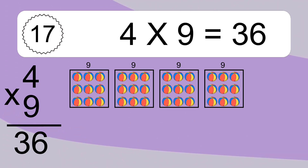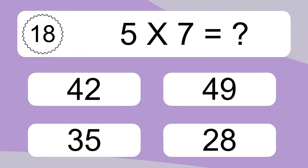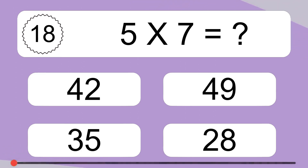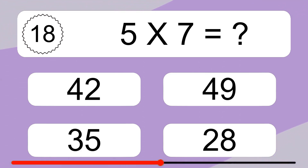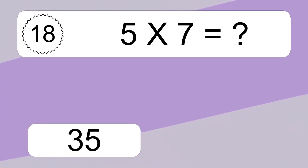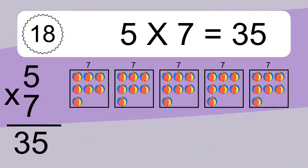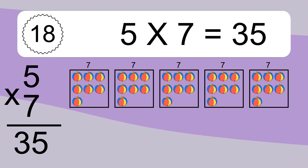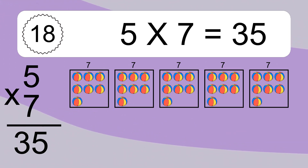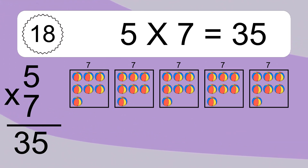5 times 7 equals what? 5 times 7 equals 35. We have 5 boxes, and each box has 7 colorful balls inside. If you count all the balls in all the boxes together, you will have 5 times 7 balls. This equals 35 balls.